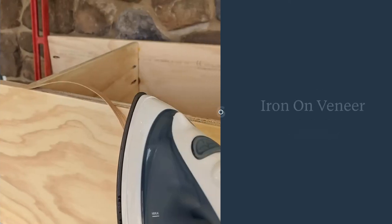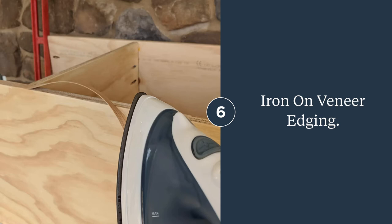To cover the raw plywood edges, I used veneer edging, and this stuff just irons on. You have to cut the right length and you just heat up your iron and iron it directly onto the raw edges.